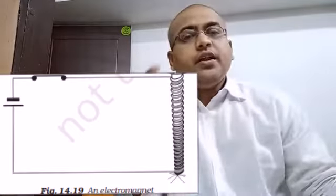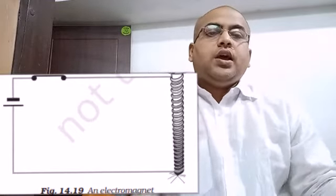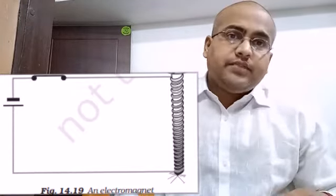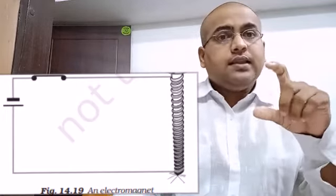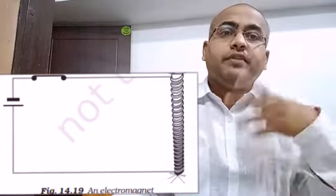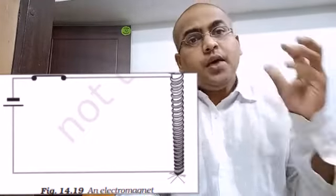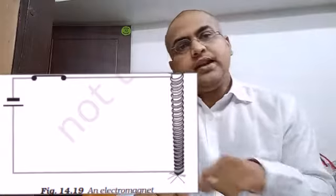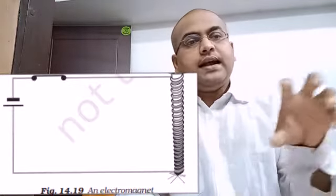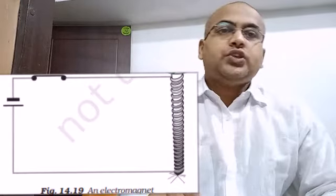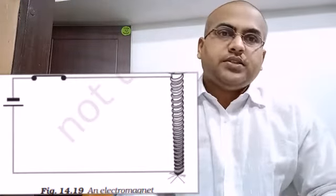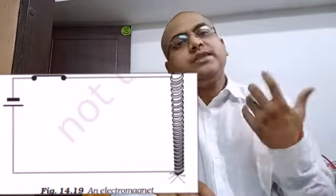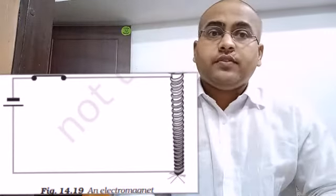Whenever you switch on this circuit, when you allow the electricity to pass through this circuit, you will observe that the nail starts behaving as a magnet. How will you understand that? Put some small pins close to the nail. You will find that whenever you switch on and allow the electric current to flow, the nail attracts the pin. And whenever you switch off, the nail releases the pins.